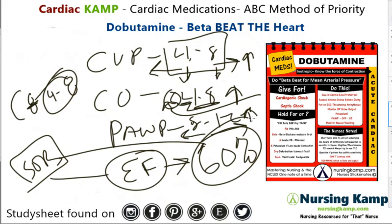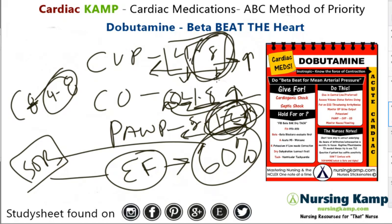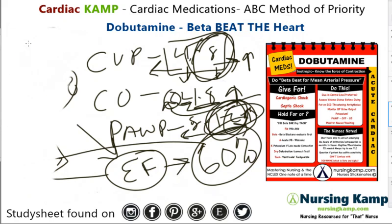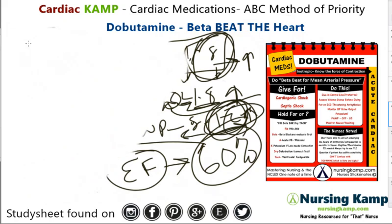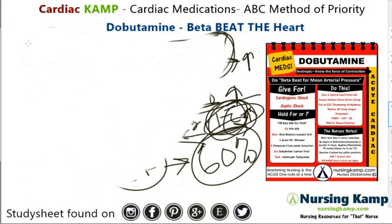With cardiogenic shock, they're going to have too much fluid on board and will be symptomatic because of decreased cardiac output. The ejection fraction and the heart aren't working, so the heart needs to pump — and we put them on dobutamine to do that.